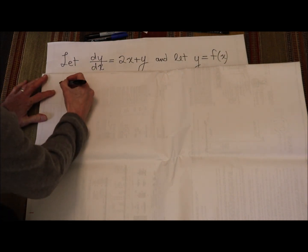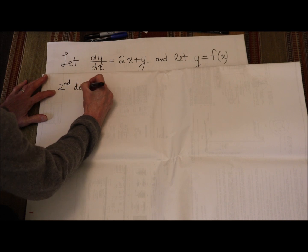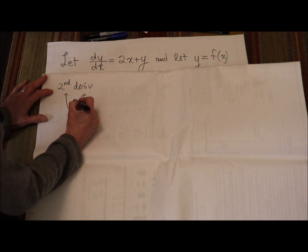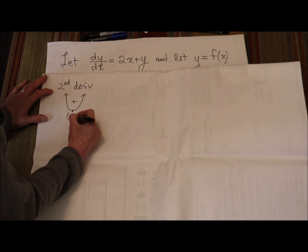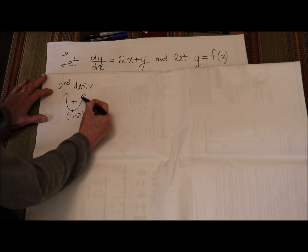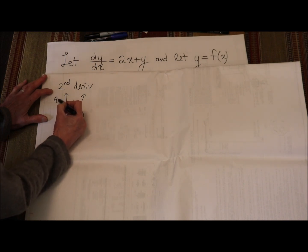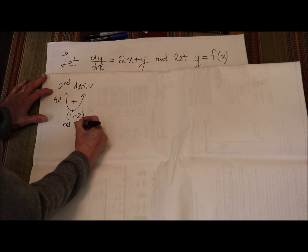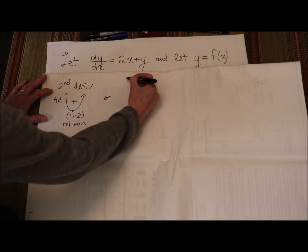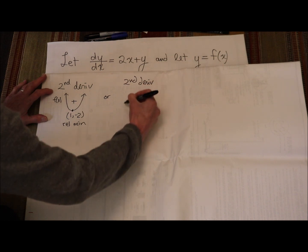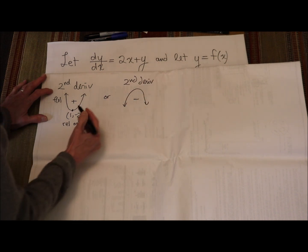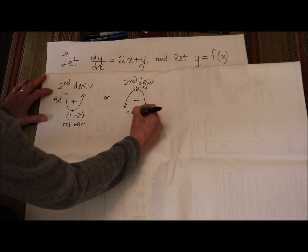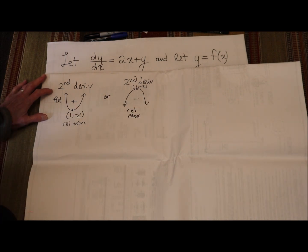How about the second derivative? The second derivative test is going to help us. If my second derivative is positive at (1, -2), then my function f of x would be concave up, which means that critical point would be a relative min. Or if my second derivative of f of x is negative at (1, -2), that means (1, -2) would be a relative max.